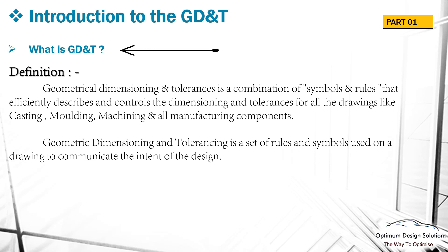What is GD&T? The geometrical dimensioning and tolerances is the combination of symbols and rules that efficiently describes and controls the dimensioning and tolerances of the drawing — like a casting drawing, a molding drawing, a machining drawing, and all manufacturing components. Simply, geometric dimensioning and tolerances is the set of rules and symbols used on the drawing to communicate the intent of the design.